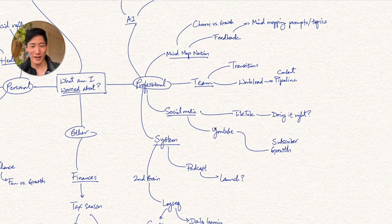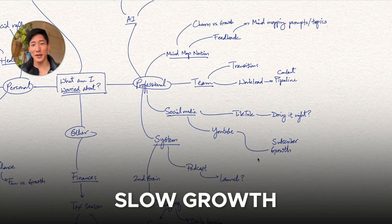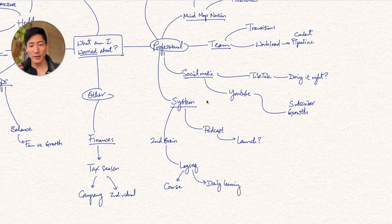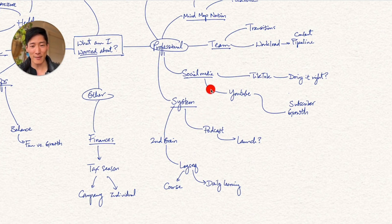And then there's social media, which is the distribution of all my content. I just started TikTok. Am I doing it right is the major question. Then there's YouTube with the subscriber growth, which I started the year with some targets I want to hit by the end of this year, but then my growth isn't happening as quickly as I expected. So there's some worry attached to that as well.